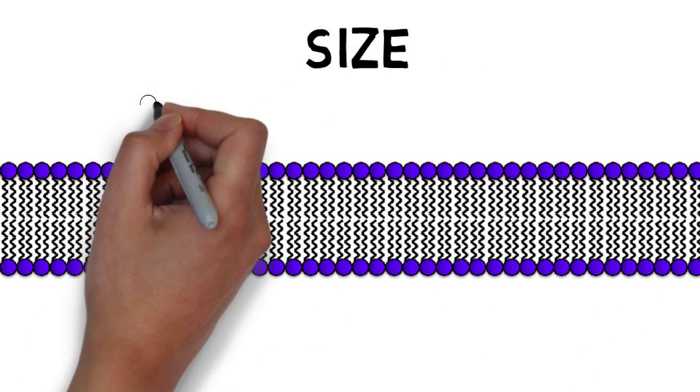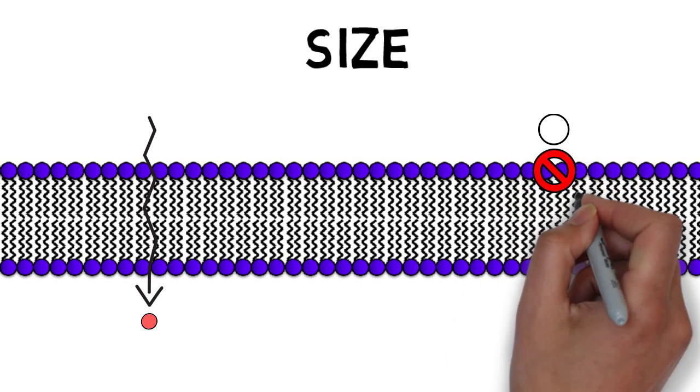Small molecules will find it much easier to slip past the tiny gaps between the phospholipid molecules, making their way in or out of the cell. However, large macromolecules such as proteins and sugars would definitely find it much harder to make it through the tiny gaps.